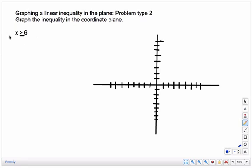They're going to give you some kind of inequality, like x is greater than or equal to 6. The first thing you do is think about that equation in terms of dropping the inequality and writing it as an equation. Then you need to graph this line on the coordinate plane.